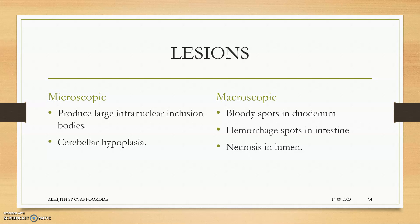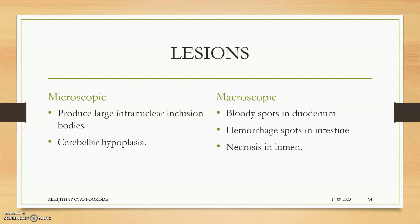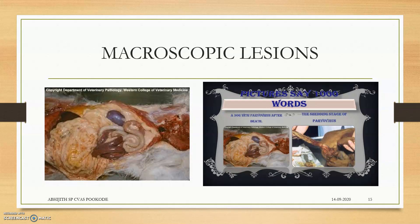Microscopically, parvovirus produces large intranuclear inclusion bodies in neurons, intestinal villi cells, cells of Langerhans, and cells of the liver — so the liver is also affected. Cerebellar hypoplasia may also occur. Macroscopically, bloody spots and hemorrhagic spots are seen in the intestine, with necrosis of the lumen. The chance of secondary bacterial infection in the intestine is also high — salmonella infection is common in parvo cases. Near the anal area, bloody spots form crusts, which can act as an invitation for other microbes causing skin lesions and pruritus.